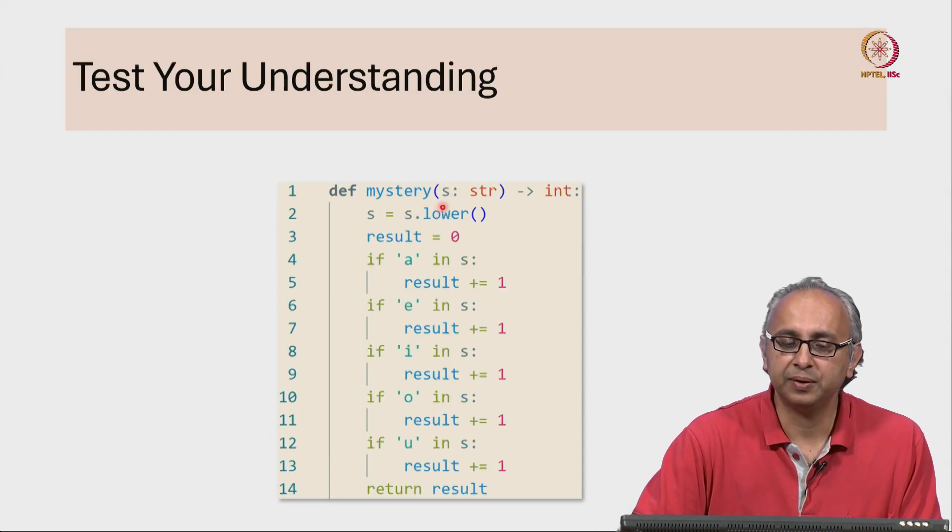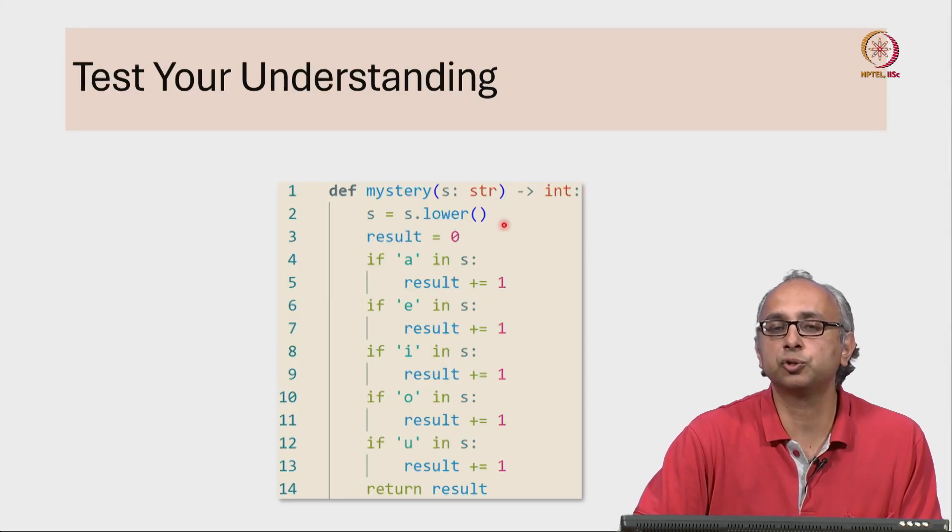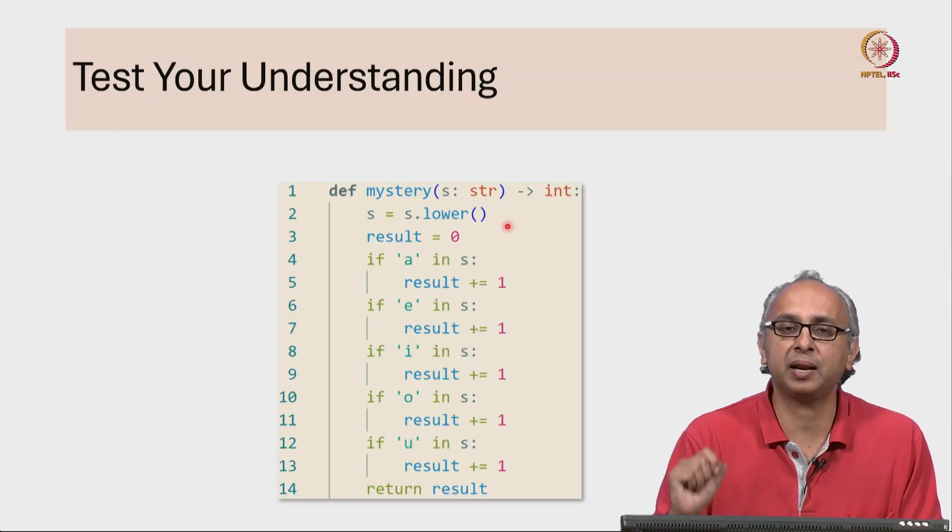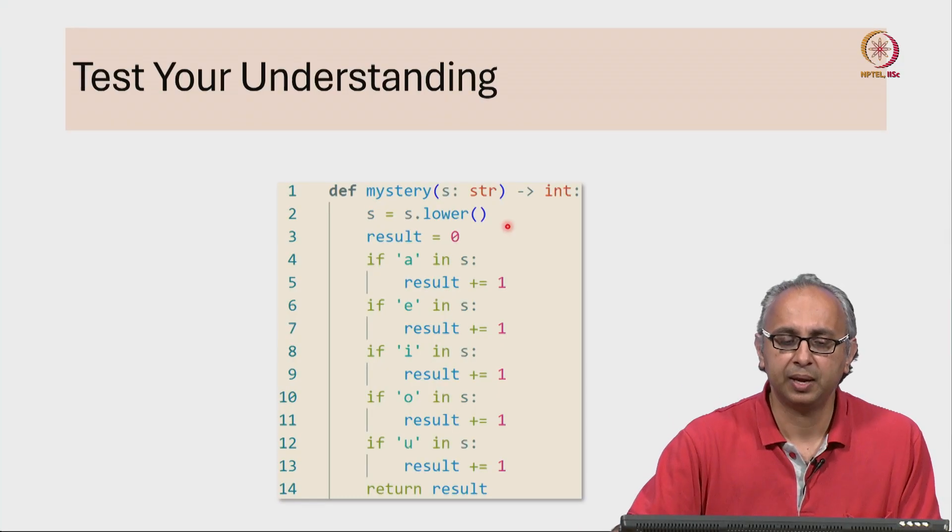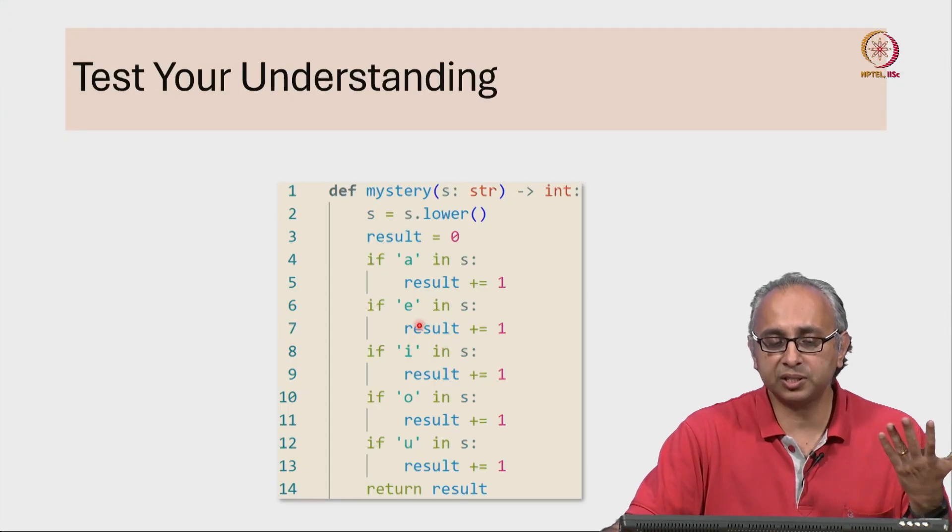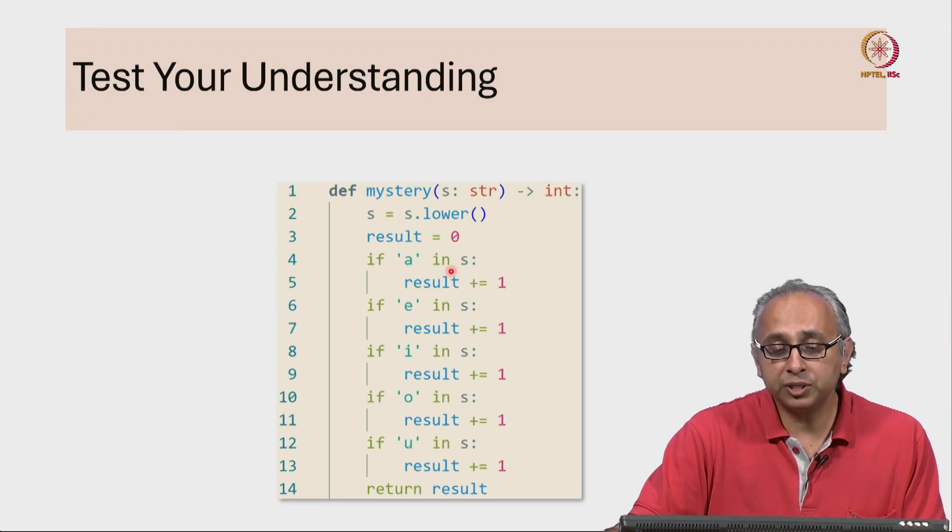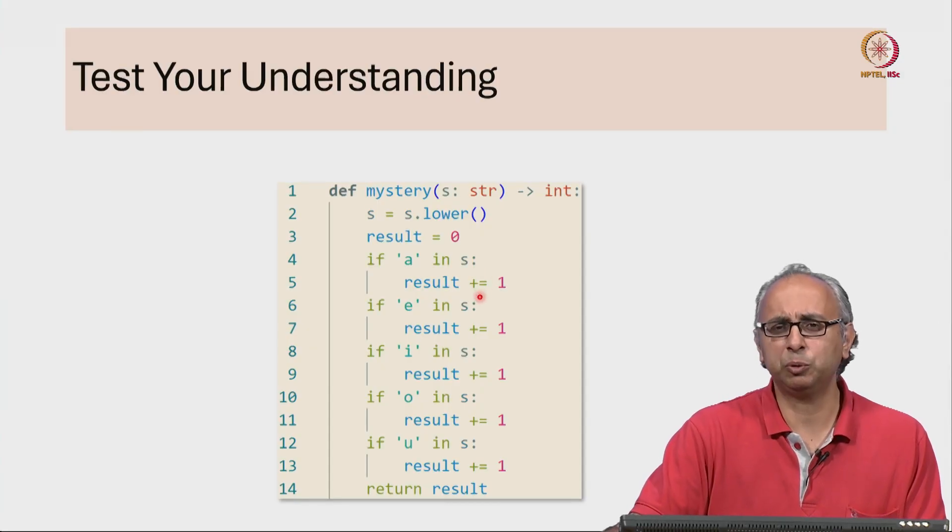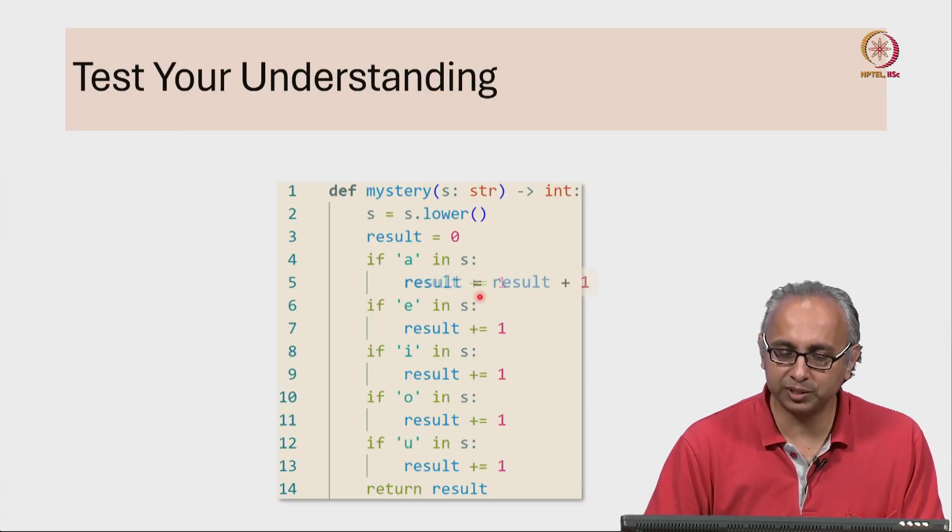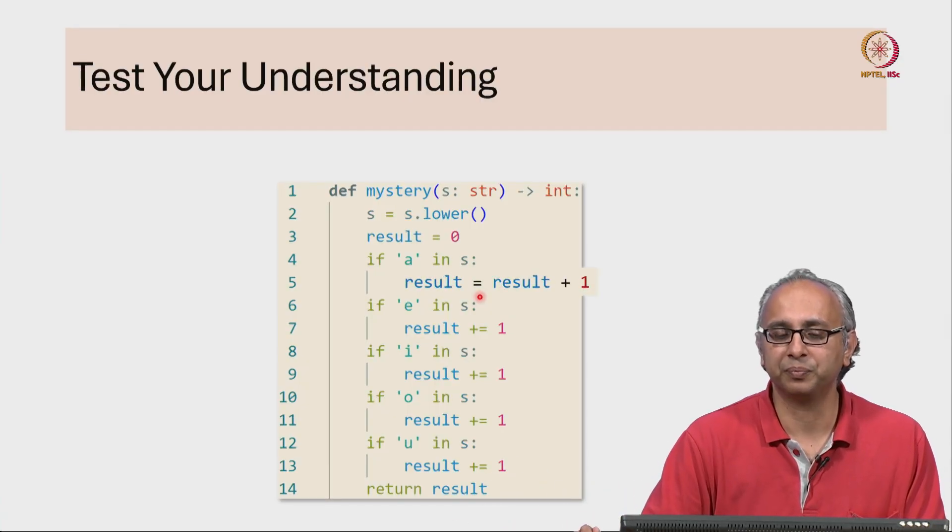Given a string S, we first convert that S to lower case which means if it has any upper case letters like the capital I in India then that will convert it to lower case. Now, we set result equal to 0 and there is no recursion in here. These are just a series of simple if conditions. We are using the in operator. We say if little 'a' is in the string then result plus equal to 1. What does this mean? Well, this is just short hand for saying result is equal to result plus 1.